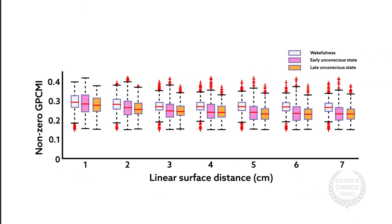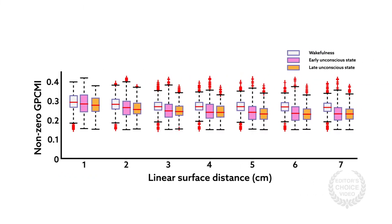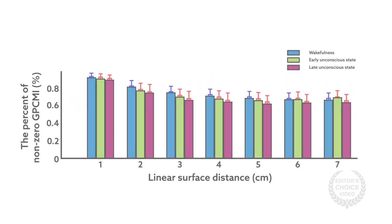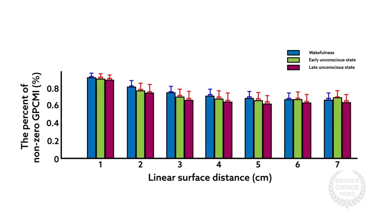In all patients, the non-zero GPCMI values fell on average as the electrode separation distance grew, leveling off at distances of 3 centimeters. The percentage of genuine connections was also higher in the wakeful state relative to the unconscious states, indicating a higher efficiency of communication.